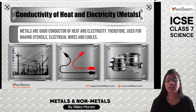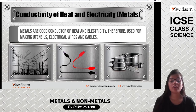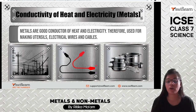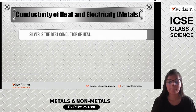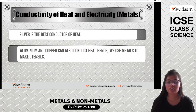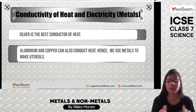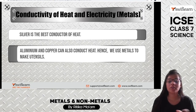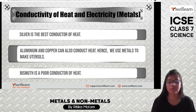Metals are generally good conductors of heat and electricity, and therefore we use them to make utensils, electrical wires, and cables. Silver is the best conductor of heat and electricity, but we do not use it in electrical wiring because it is very expensive. Therefore we use copper. Aluminium and copper also conduct heat well, so we make utensils from them. Bismuth is a poor conductor of heat.